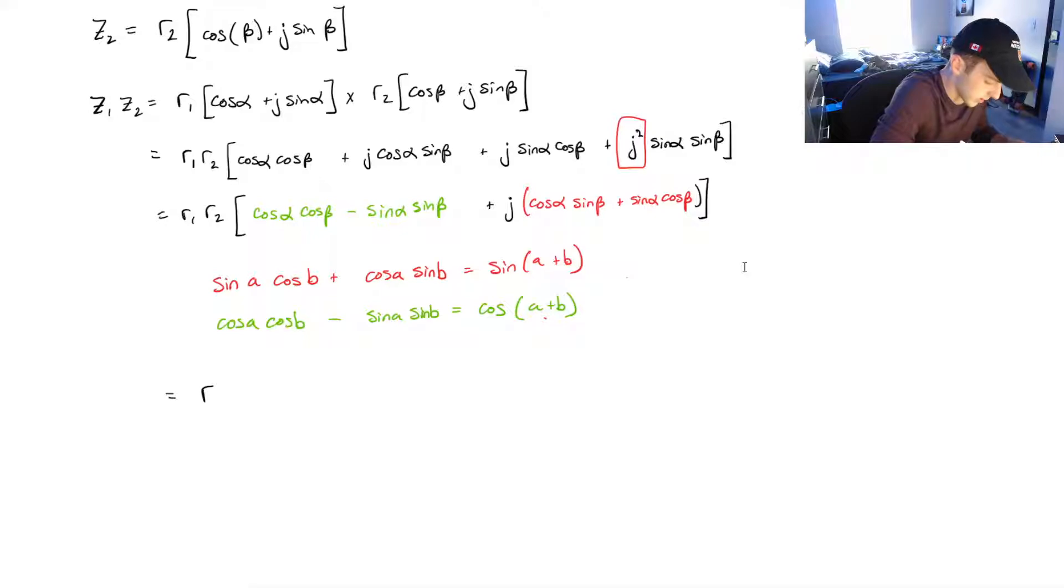So, now we can rewrite this as r1 times r2 times. And then, that green part is just going to be cos of alpha plus beta plus... And then, this imaginary part, that will simplify to sin of alpha plus beta. And it's starting to look a lot more similar.